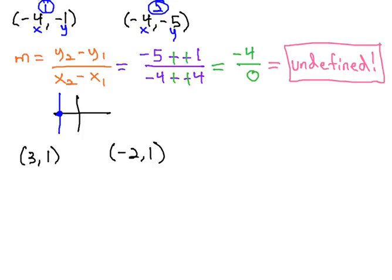Let's take a look at this next one: (3, 1) and (negative 2, 1). Again, the slope formula is m equals y2 minus y1 over x2 minus x1.